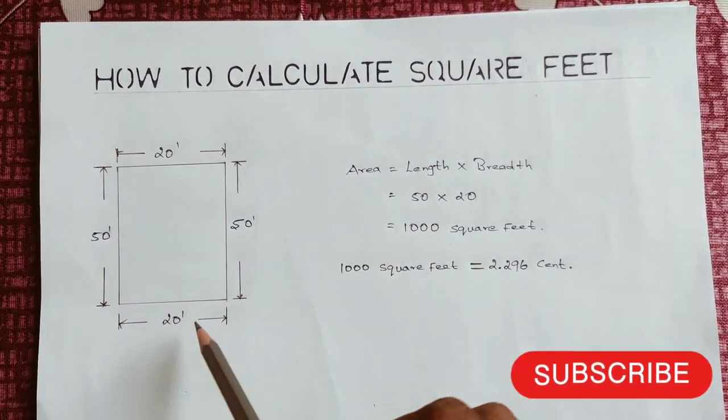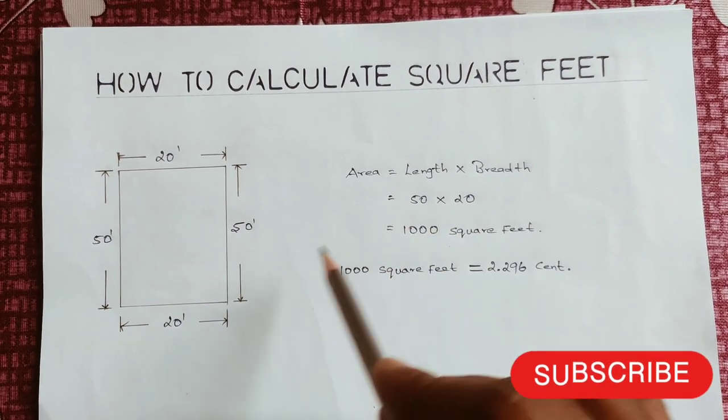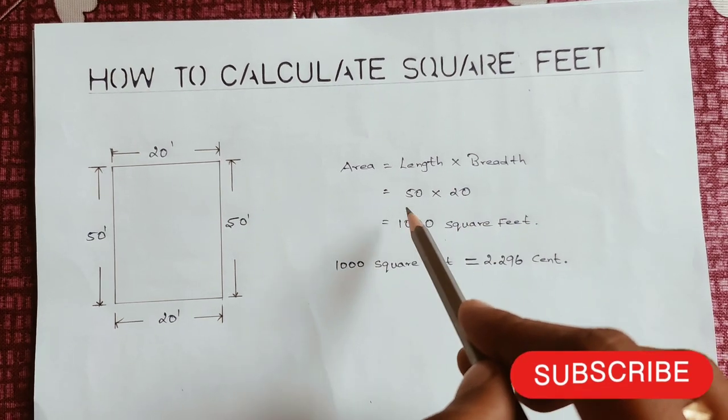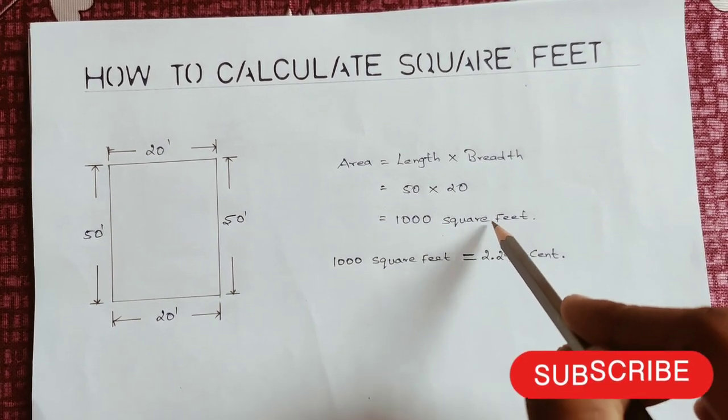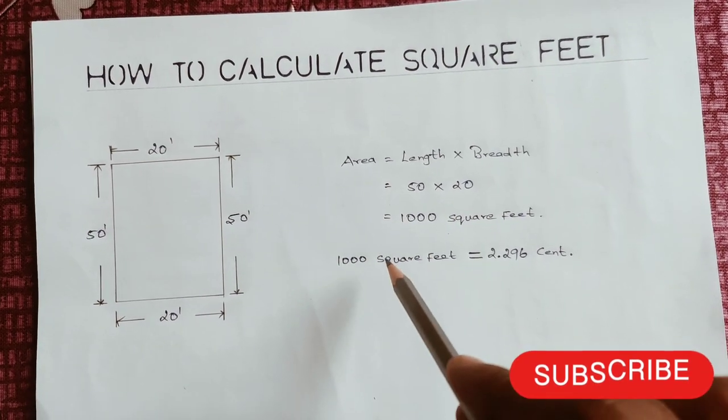For this particular form, we want length times breadth. We can measure length to 50 and the breadth to 50, and we want to multiply the length times breadth. So this area is 1000 square feet.